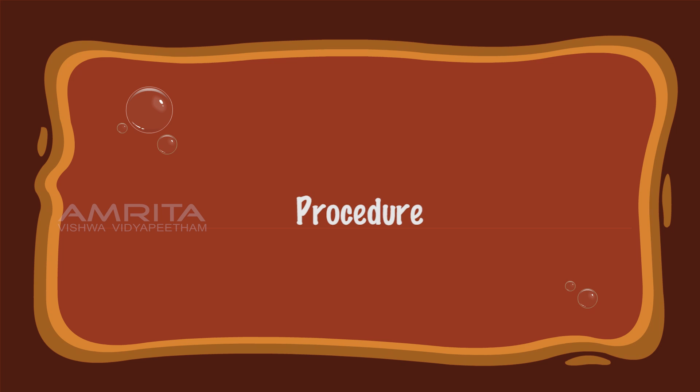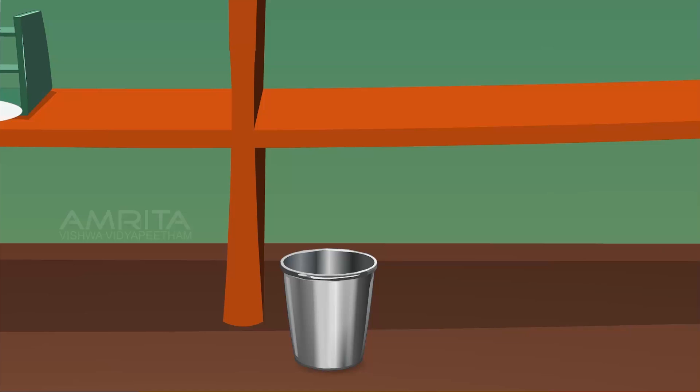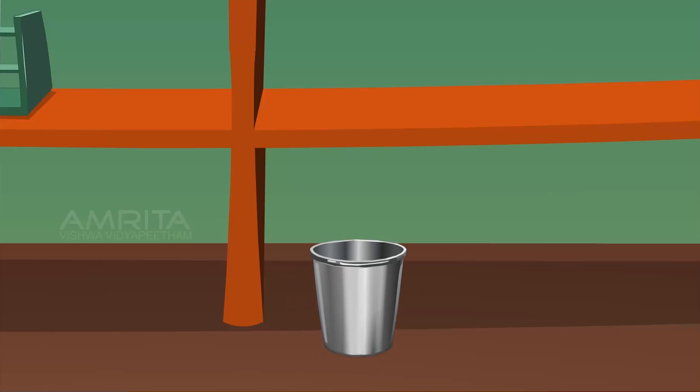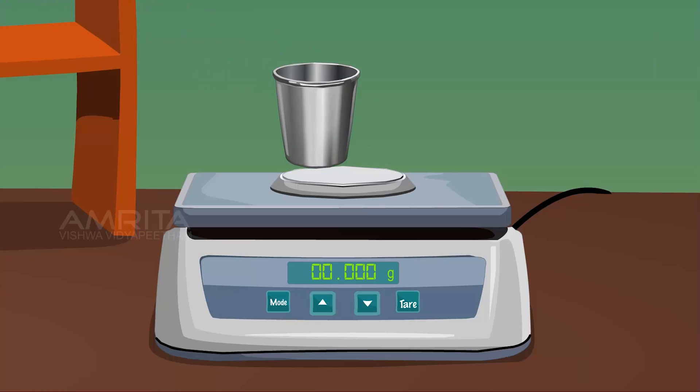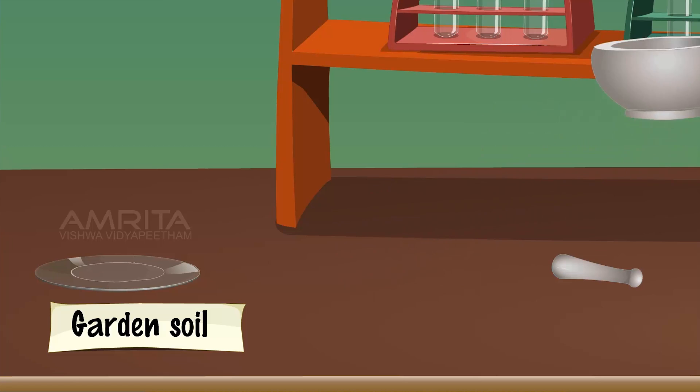Procedure: Take a watch glass containing garden soil and put it into a mortar. Using a pestle, grind the sample into fine powder. Take a filter paper and place it in the bottom of the tin box. Weigh the tin box along with the filter paper and note its weight. Transfer the fine powdered soil sample into the tin box.